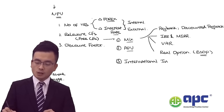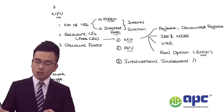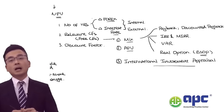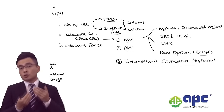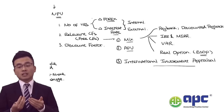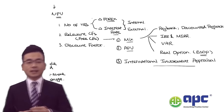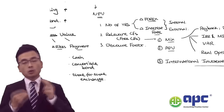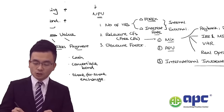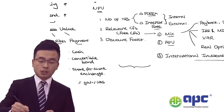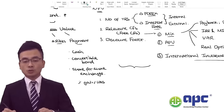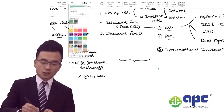The third category is international investment appraisal — investing money overseas and receiving money in foreign currency. We need to perform NPV calculations for that, considering the number of years, relevant cash flows, the discount factor, and risks and uncertainty.